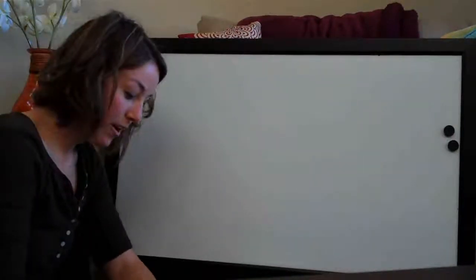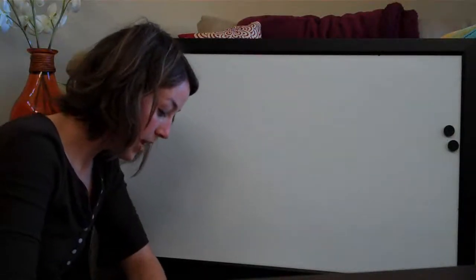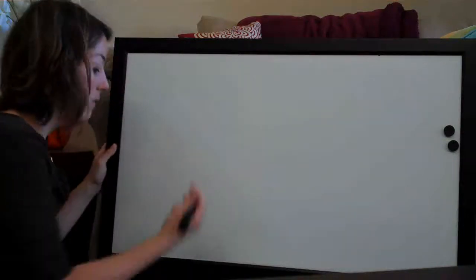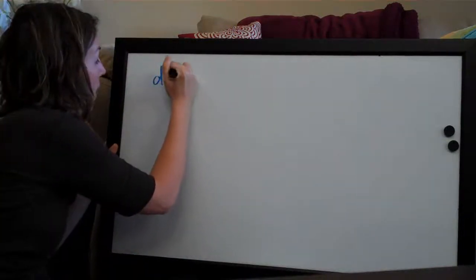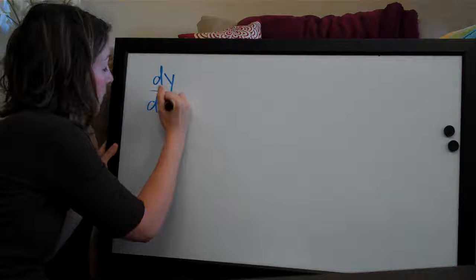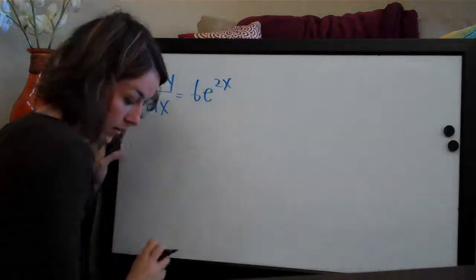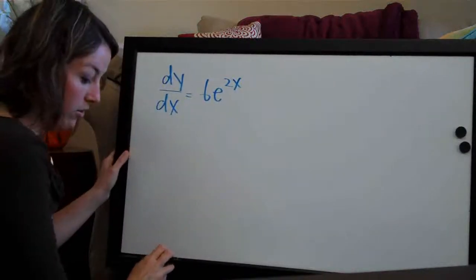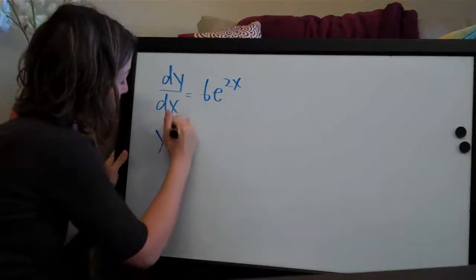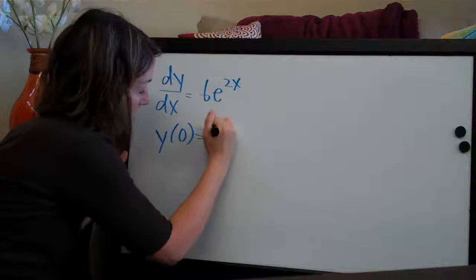Hi everybody! One more initial value problem today. This one is dy/dx = 6e^(2x) and the initial condition is y(0) = 10.